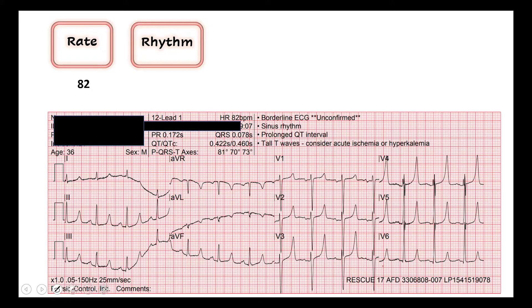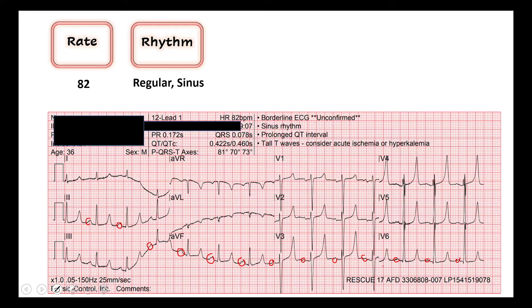Our second thing we look at is the rhythm. The two questions we ask: is there a P wave before every QRS, meaning the signal for the heart to beat is coming from above the ventricles and the sinoatrial node? Sometimes our best place to see a P wave is lead two. Working through a little bit of this artifact, I do see P waves all across the 12-lead, so we will call this sinus rhythm. Next question: is it regular or irregular? The global look at this 12-lead — it looks regular. So I would call this a regular sinus rhythm.